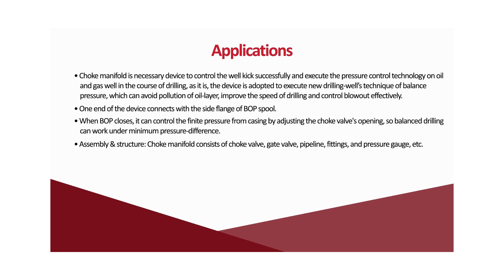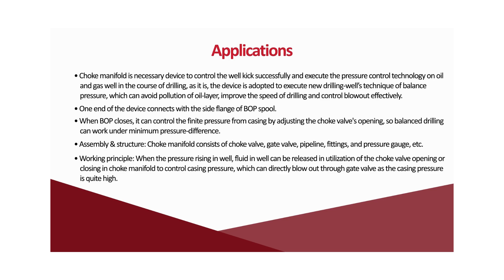The choke manifold consists of choke valve, gate valve, pipeline, fittings, and pressure gauge. In terms of working principle, when pressure rises in the well, fluid can be released by utilizing the choke valve opening or closing to control casing pressure, which can directly blow out through the gate valve when casing pressure is quite high.